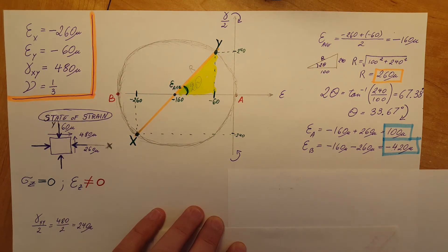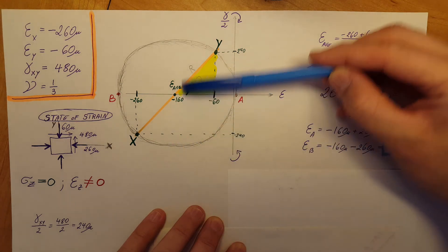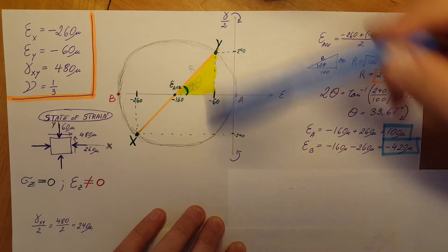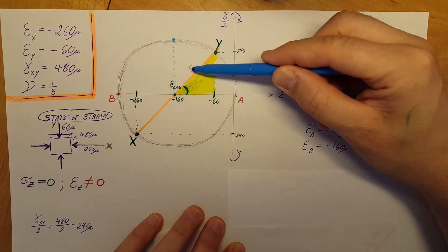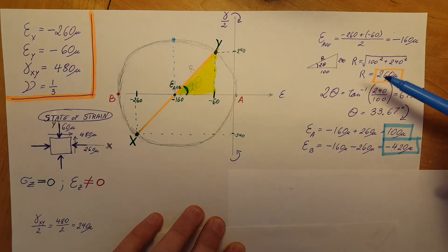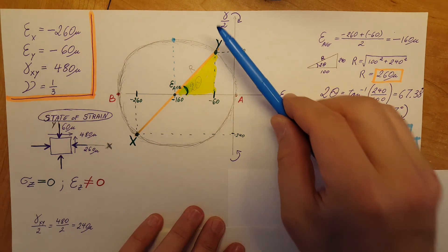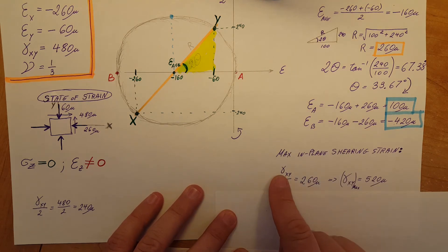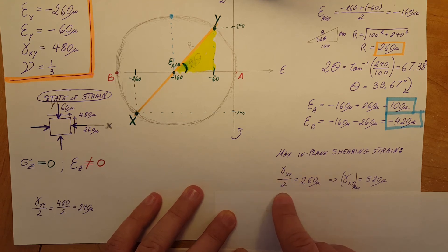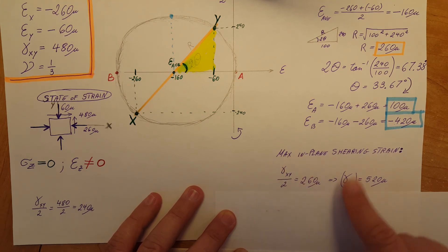Next, they want us to find the maximum in-plane shearing strain. In-plane for us is XY. The maximum shearing strain corresponds to the top of the circle — the radius R, which we already found to be 260 microns. But remember, Mohr's circle is set up with shear divided by 2. So shearing strain XY divided by 2 equals 260, meaning the in-plane shearing strain equals 520 microns.